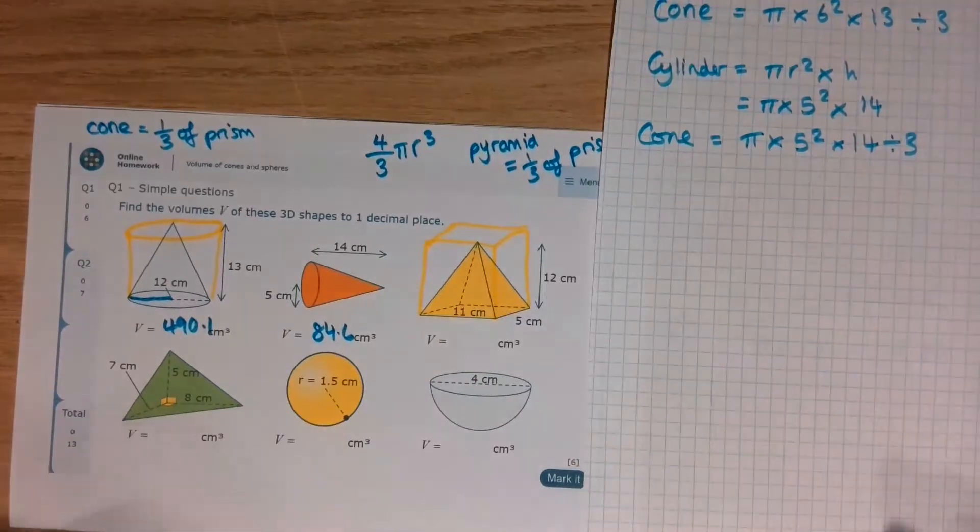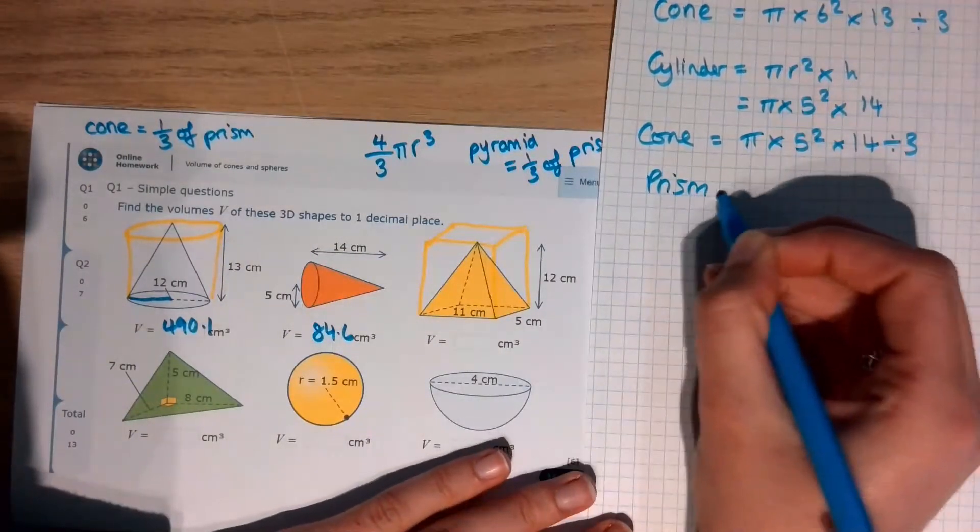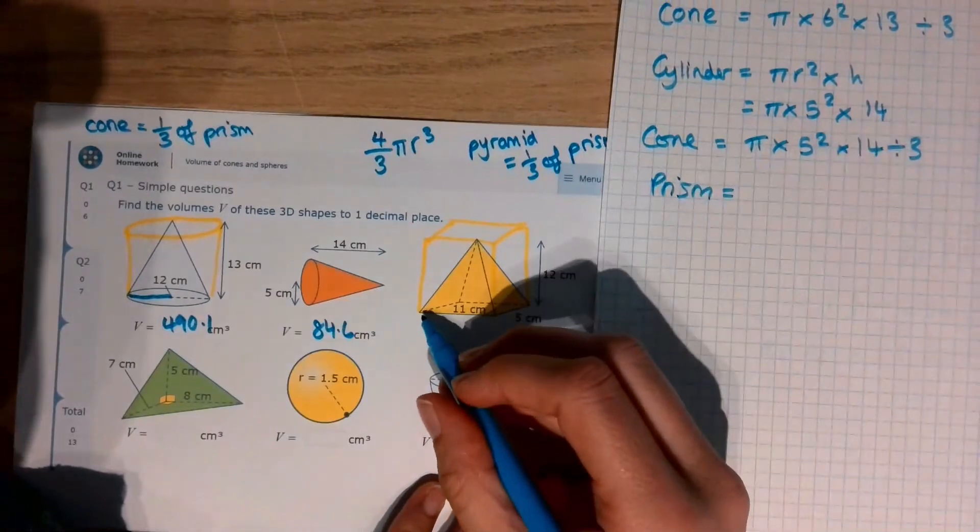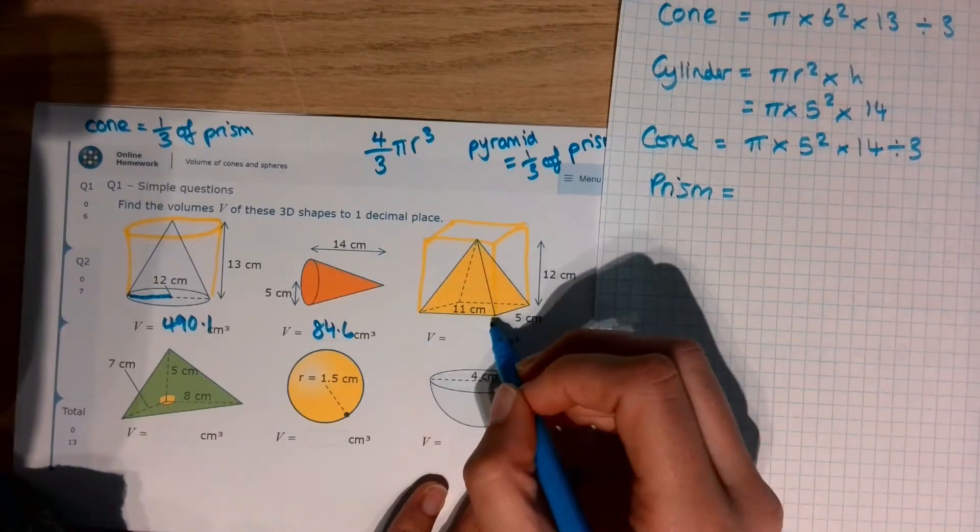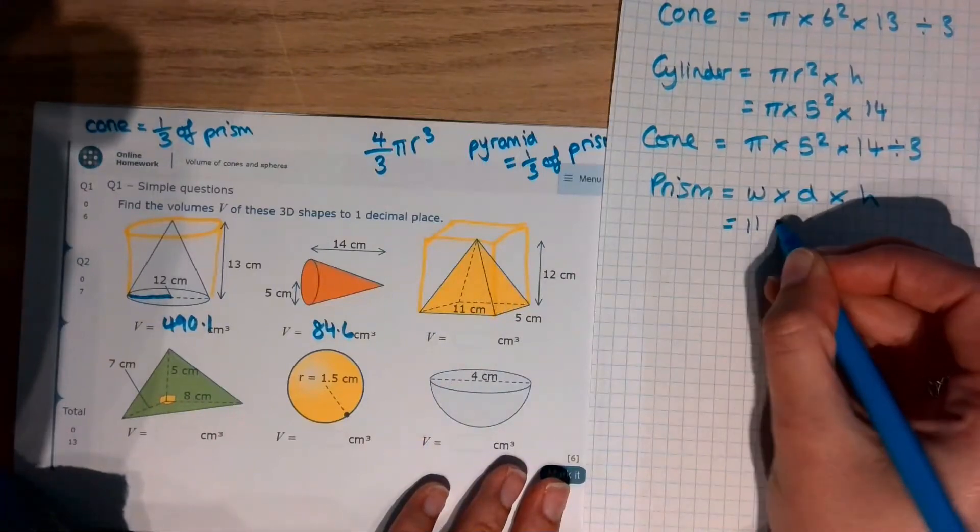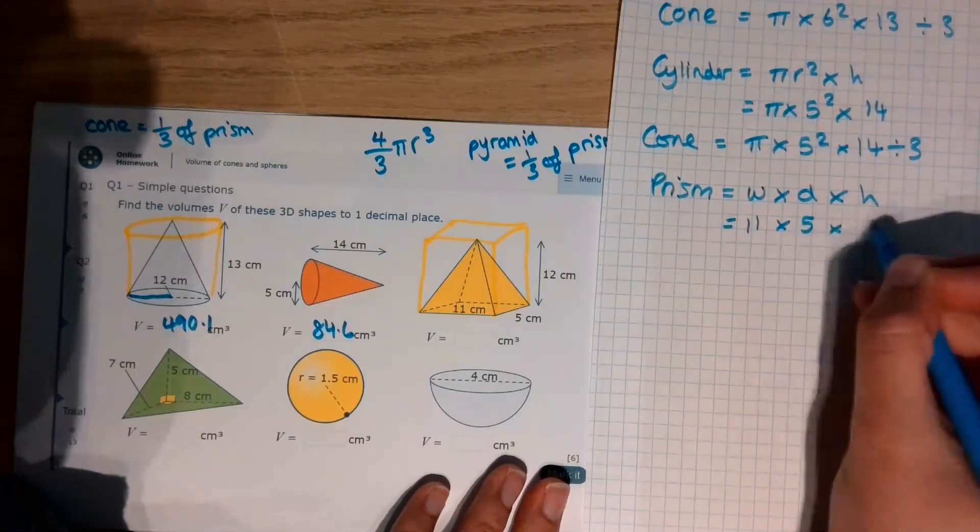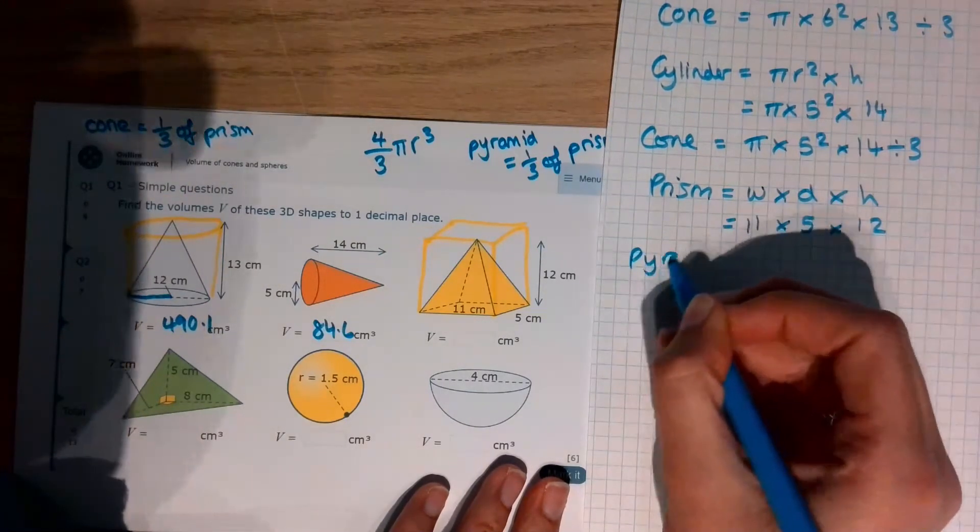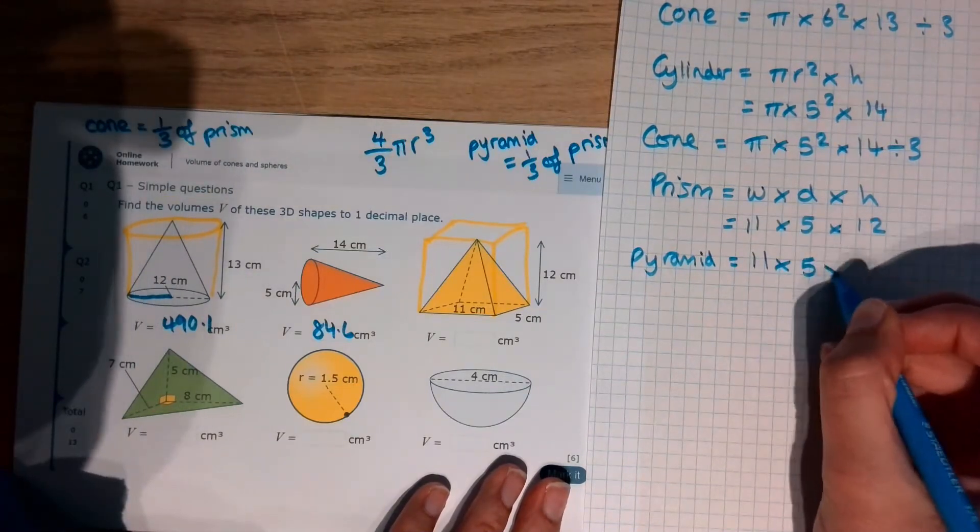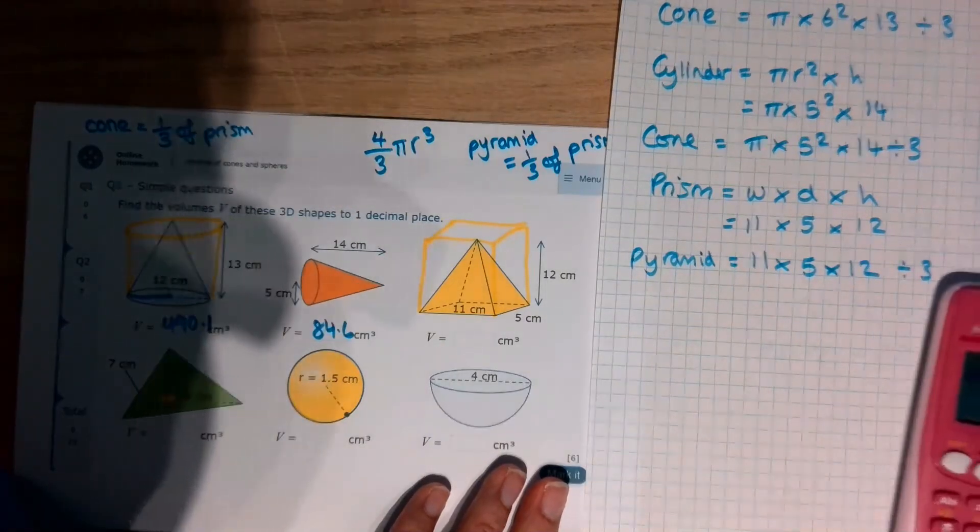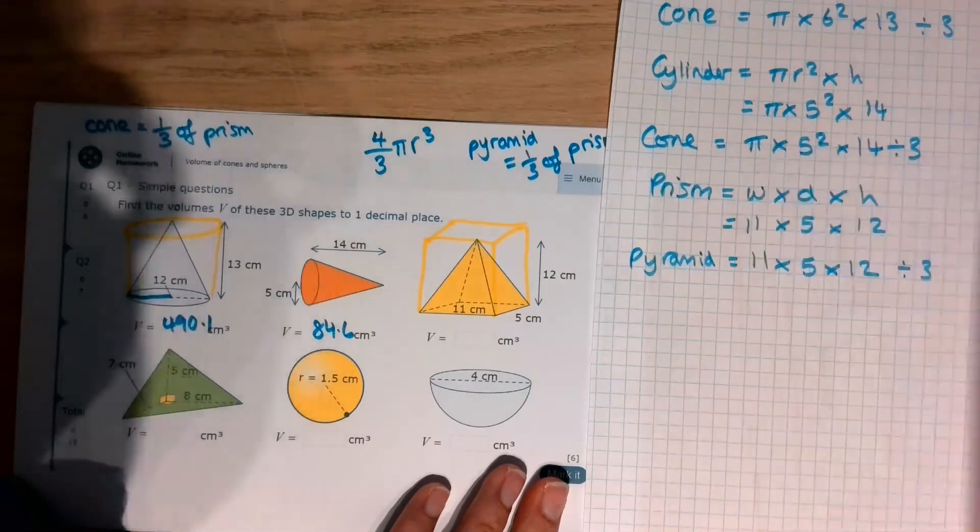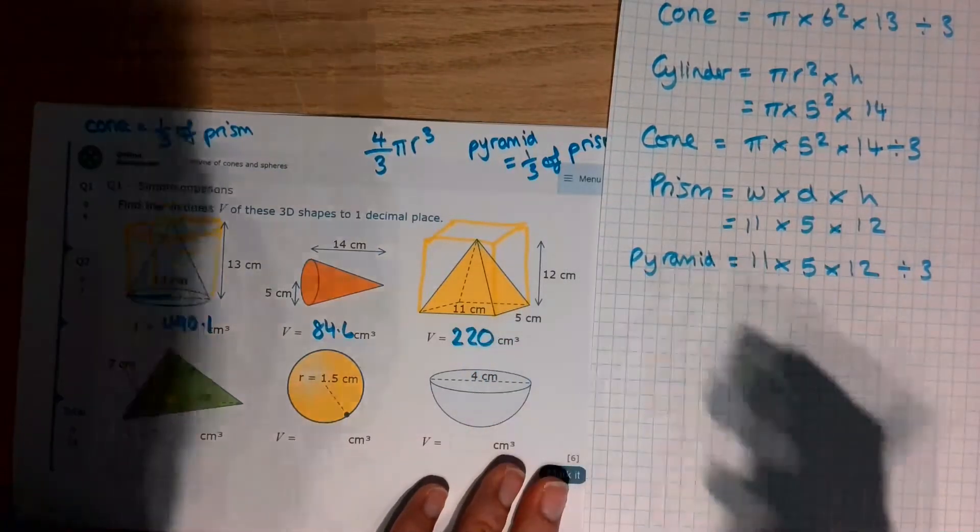Moving on to my square-based pyramid. My prism is going to be the area of my rectangle multiplied by the height. The rectangle is width times depth times by the height. The width is 11 times by the depth is 5 times by the height is 12. But I'm not going to work that out because we are interested in the pyramid. And the pyramid is the same as the prism, same as the cuboid, then divided by 3. 220. No pesky decimals there.